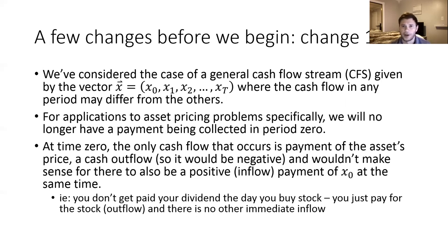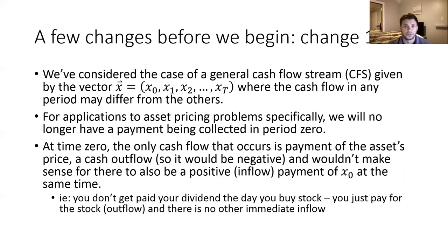It wouldn't make sense at the time you buy the asset at time zero for the asset to also make a payment to you of X-zero. For example, when you go buy a bond or stock, the day you buy it, you pay some money for it and then you own the right to the future cash flow. It wouldn't make sense if you bought a stock for $100 for them to immediately pay you a $2 dividend — they should have just subtracted that $2 from the $100 price and called it a $98 stock. So the first change: we're going to get rid of X-zero. The first payment is going to be X-one in period one.